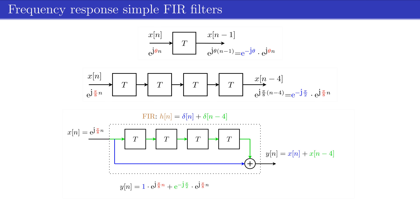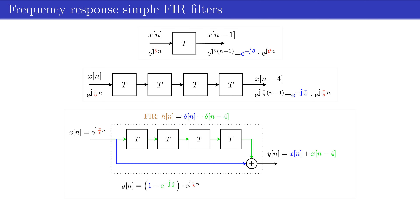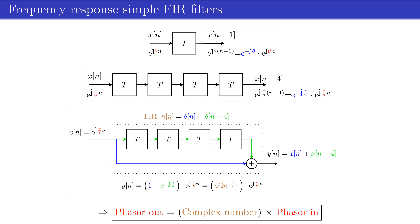Since both terms contain the same phasor, we can combine the two terms. The first part of the resulting expression is a complex number, which can be written in a polar way as described in brown. It follows that the output is a phasor equal to the input phasor multiplied by a complex number. In other words, the simple FIR filter did not change the frequency of the input phasor — it has only changed its amplitude and phase.